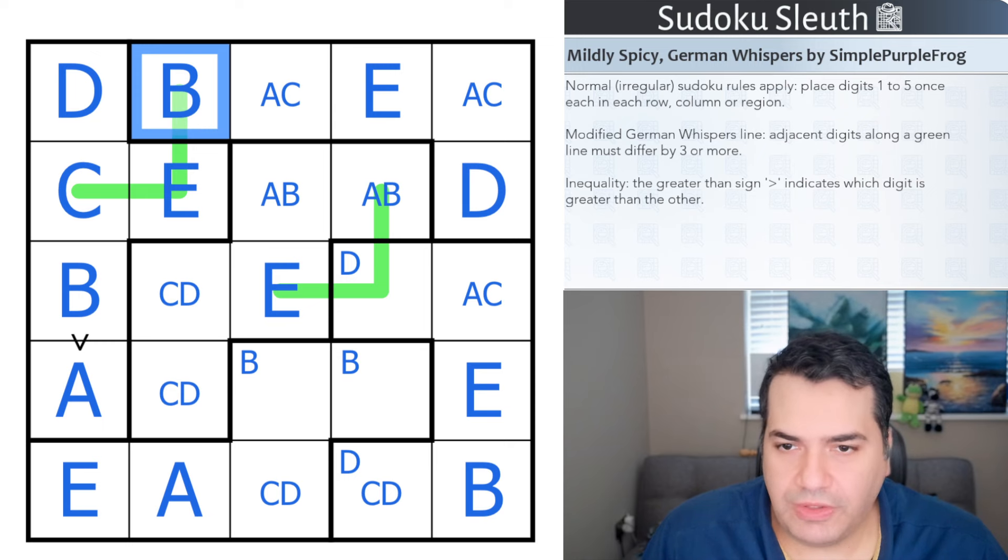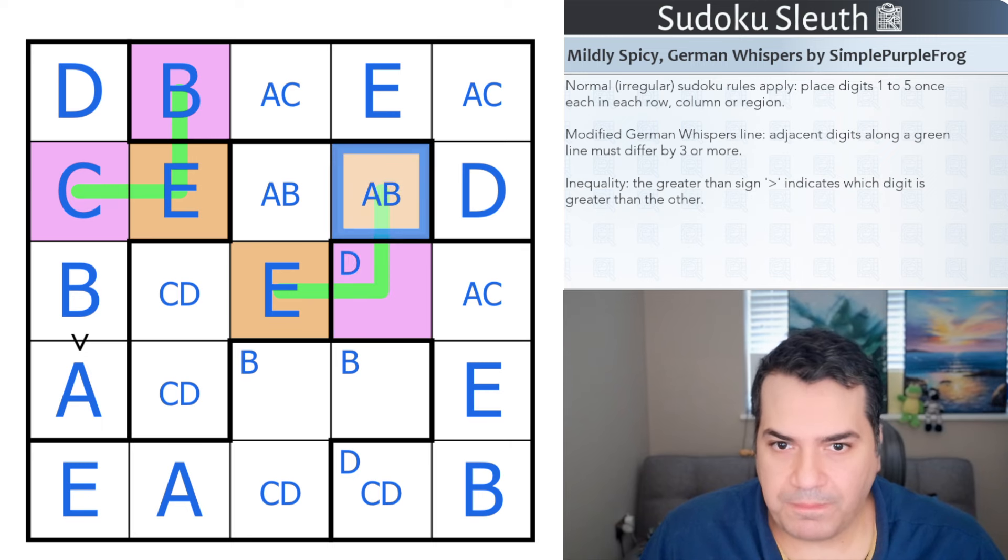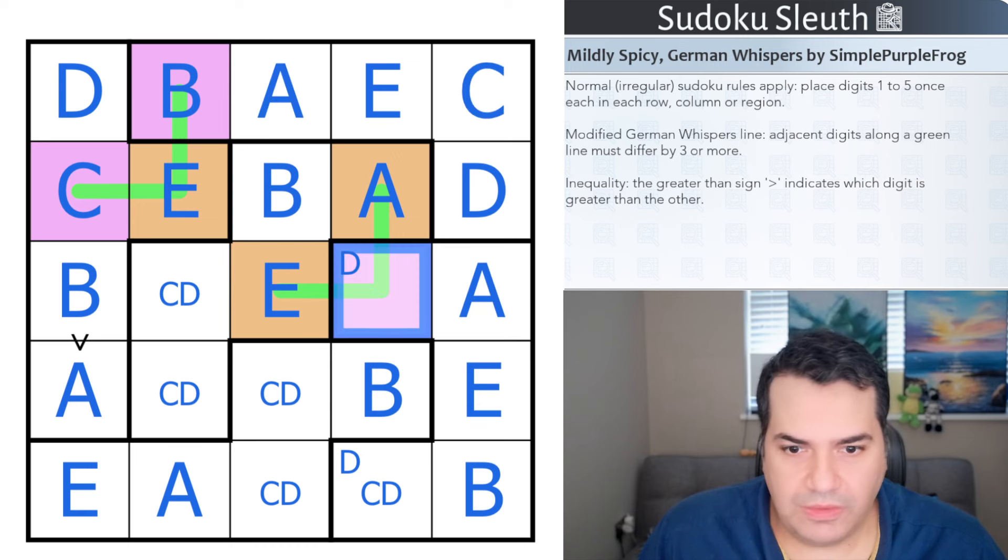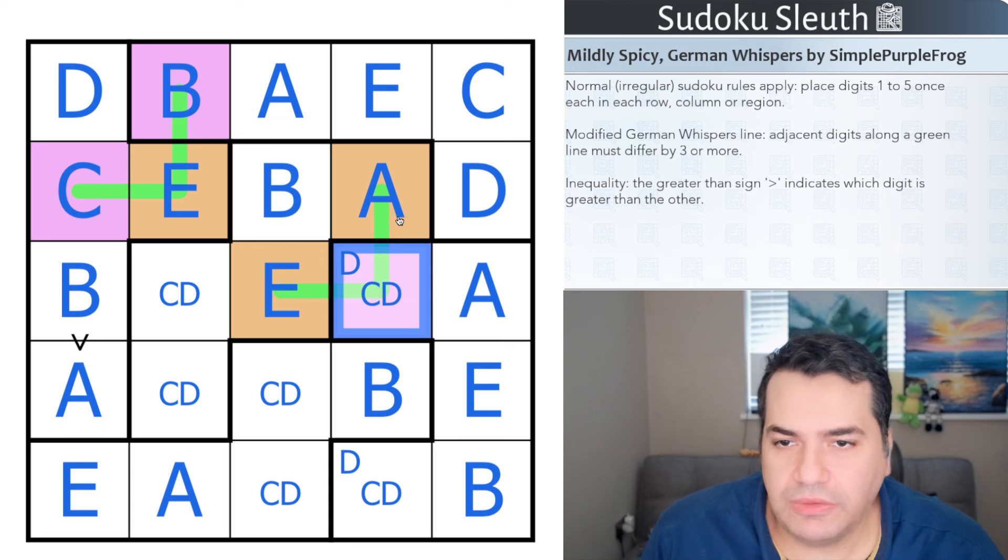So we can never have a three on these modified German whispers. What we can also do is color them. I don't know which one is high or low, but you can see this E—if I give it a polarity color of orange—these are going to have to be purple, this would have to be purple, this would have to be orange, which immediately tells me that has to be A because it's a different color than this B. So that's A, that's B, therefore that's B. This is C or D—I don't know which it is yet—but I do have CDs lining up. That's A, that's C, that's A, and this is C or D.